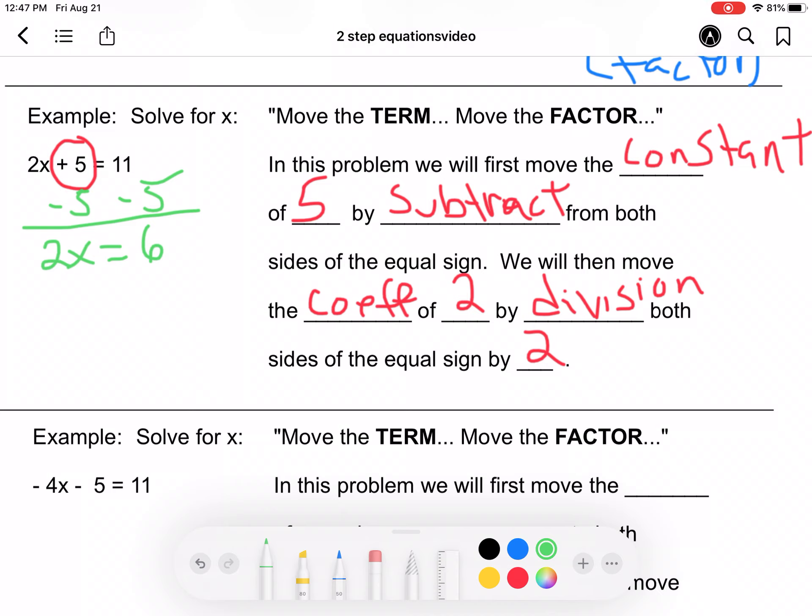Of the equal signs by the coefficient, which is 2. So we would divide both sides by 2. So 2 divided by 2 is 1, which we do not have to write. It leaves us x is equal to 6 divided by 2, which is 3. That is your final answer.